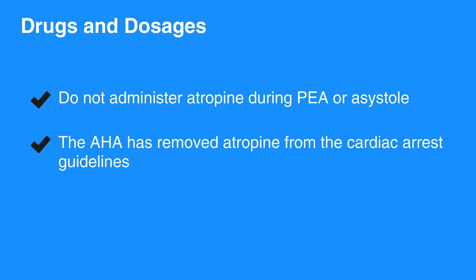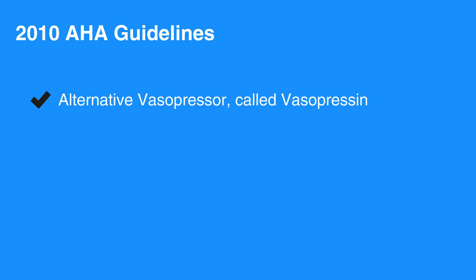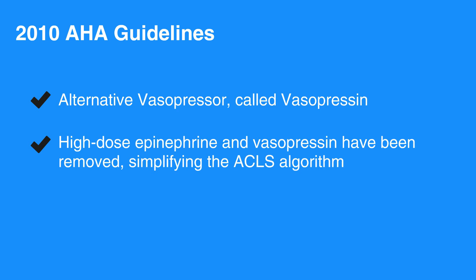You may only administer a standard dose of epinephrine or vasopressin. Preliminary research suggested that epinephrine in higher doses may produce improved results in resuscitation. However, research conducted after the 2010 guidelines publication failed to show any benefit over a standard dose of 1 mg epinephrine. The 2010 AHA guidelines offered an alternative vasopressor called vasopressin, which could be used instead of or after the first dose of epinephrine. Subsequent research showed that vasopressin offered no benefit over standard dose epinephrine. Without a demonstration of superiority, both high-dose epinephrine and vasopressin have been removed, simplifying the ACLS algorithm.